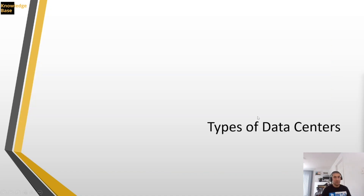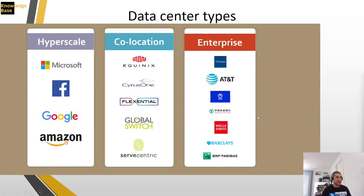Moving on, let's talk about the types of data centers. We see three main types: hyperscale, co-location, and enterprise data centers. One more type that has emerged significantly in the past 10 years is the edge data center.